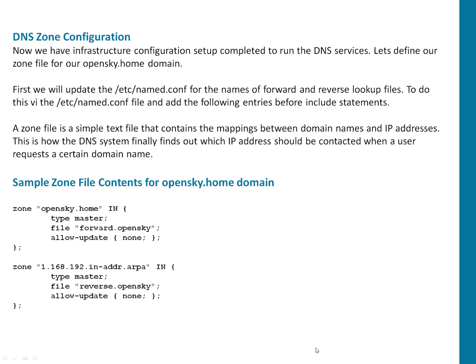You can see on my screen I'm going to add this particular content in /etc/named.conf. Let me give you more detail about what this content is all about. Here in this example the zone is opensky.com — this is my domain which I'm going to configure. My server name will be something like testserver.opensky.com. Opensky.com is a domain which is specified as a zone in this particular file.